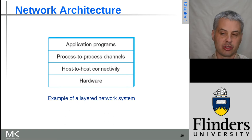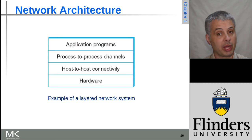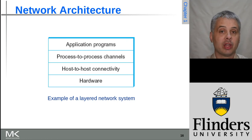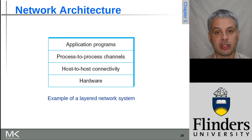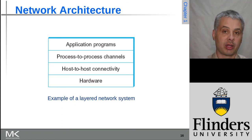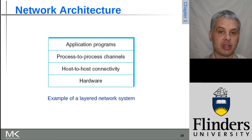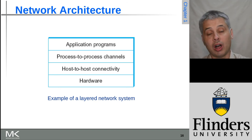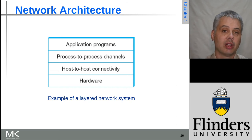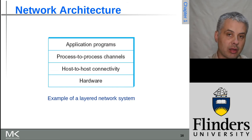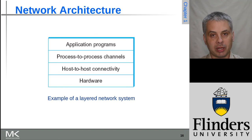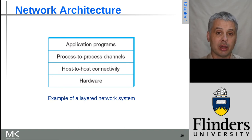This dramatically simplifies things — we can swap the hardware out without having to change an application, and we can change the host-to-host connectivity as well. This is how IPv6 has been implemented over time: we didn't need to change the URLs we use, because we have a host-to-host mechanism handling hostname to IPv4 or IPv6 resolution at the lower level. This saves tremendous effort and introduces great flexibility and longevity into a network design.